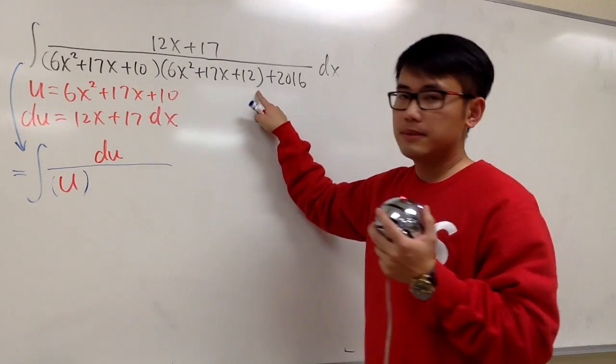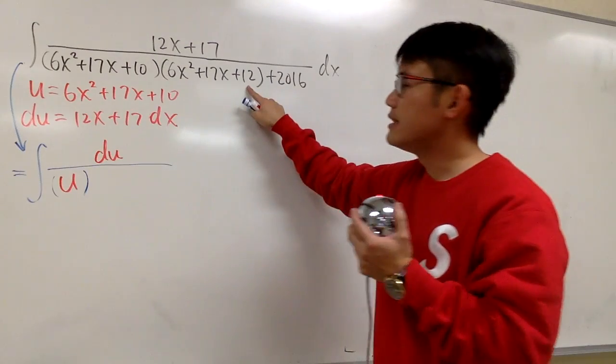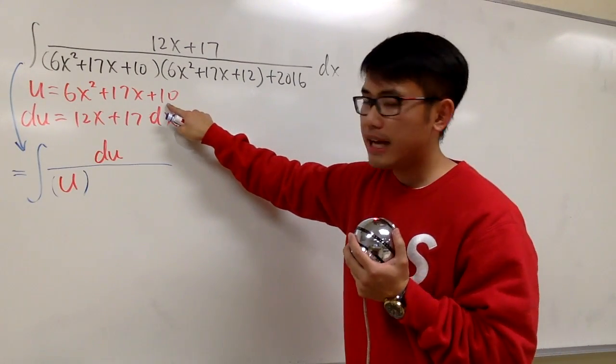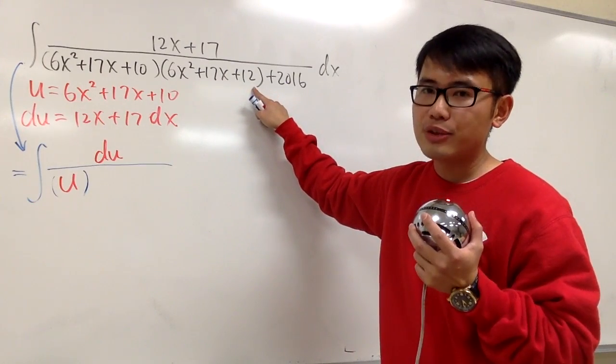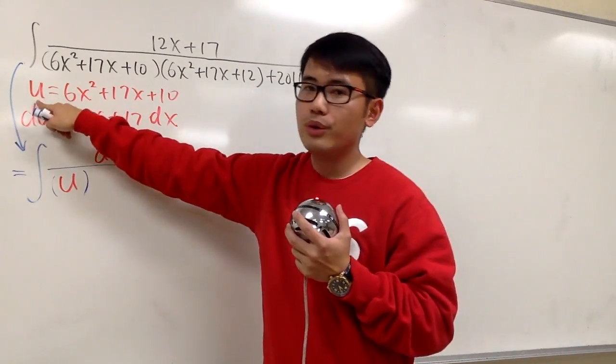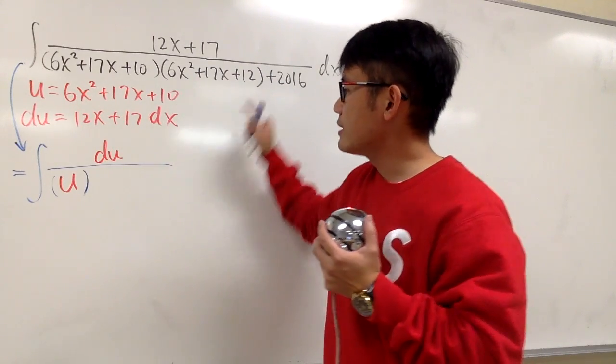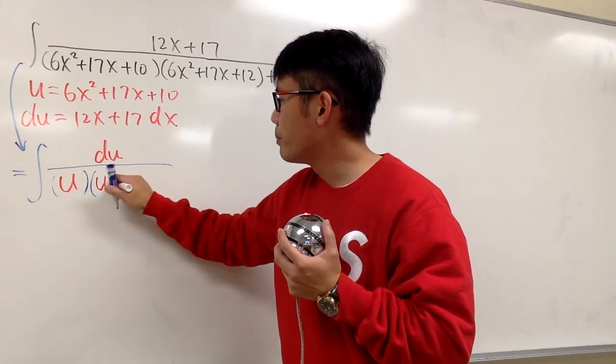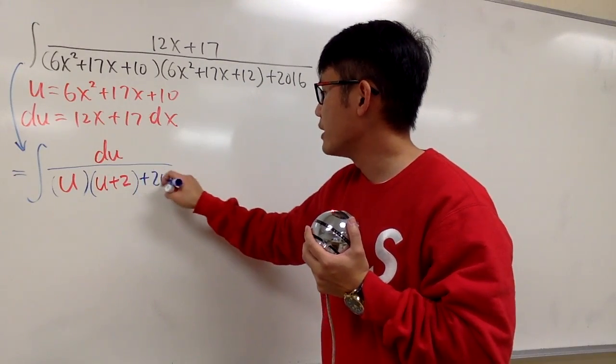And then for the second parenthesis, this right here, they match, but then this is plus 12, and this is plus 10. So that means for the second parenthesis, this term is actually 2 more than u. We have to add 2, so we can get the plus 12, right? So for this, it will be u plus 2. And then we still have the plus 2016.